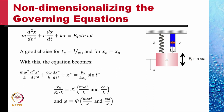A good choice for tc, the characteristic value of time, is 1/ω — the reciprocal of the forcing frequency. A good choice for xc is the amplitude F₀/k. With these choices, the equation is normalized and the coefficient of one selected term becomes 1. We could make the coefficient of any term equal to 1; it really does not matter.